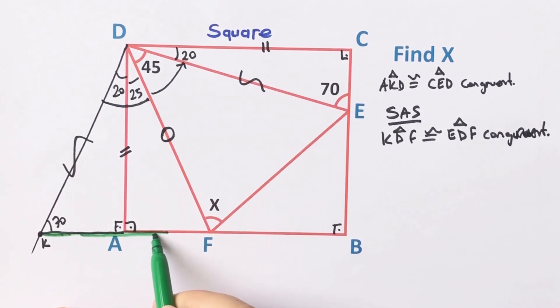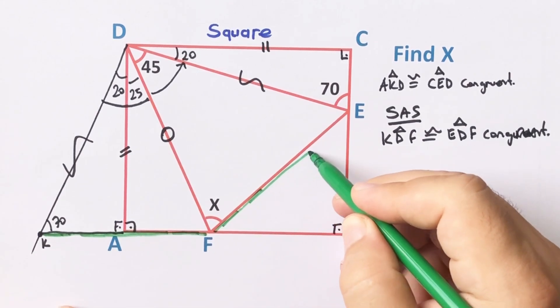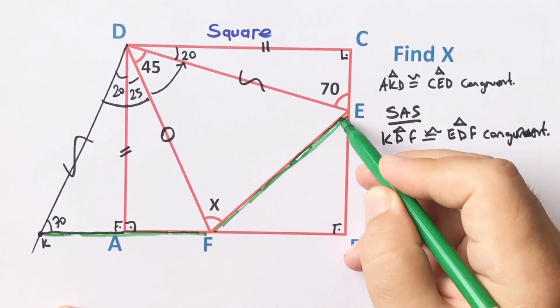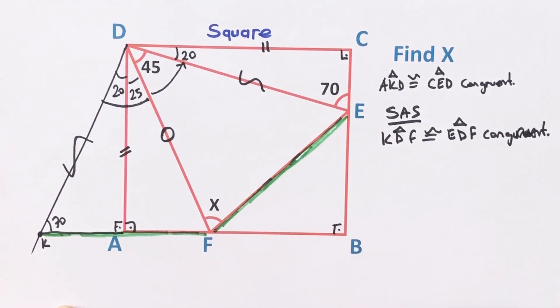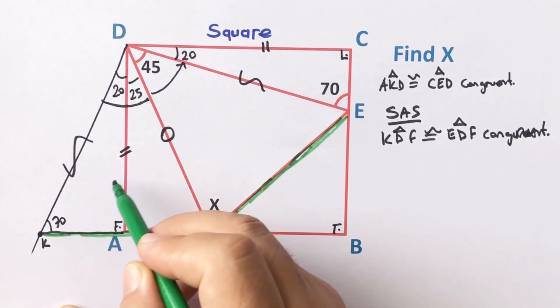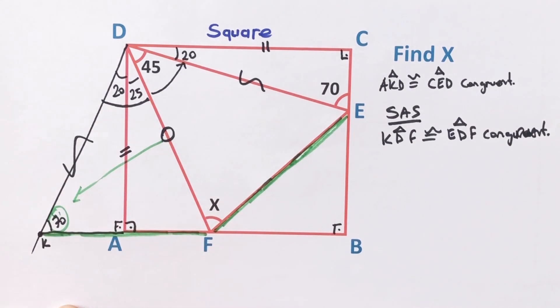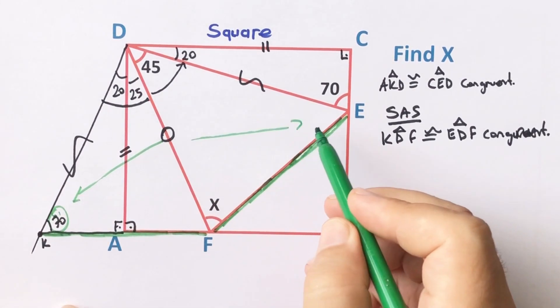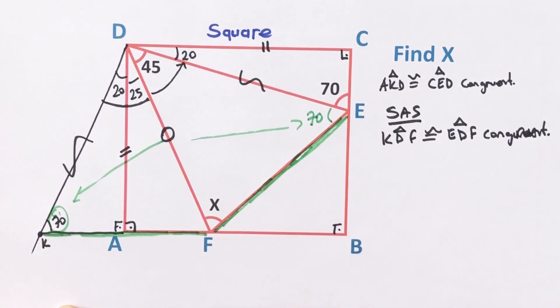So I draw with green pen. Therefore if there is a 70 degrees, opposite of this length, opposite of the same length must be 70 degrees.